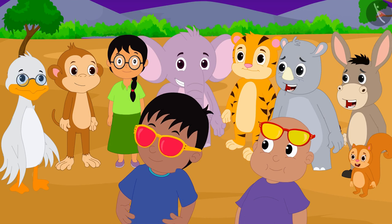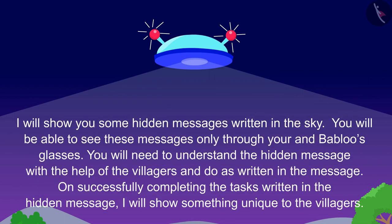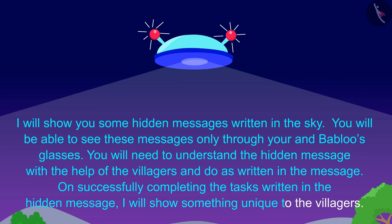Now Raju put on his glasses and looked in the sky towards Jeev's flying saucer. Raju saw this written in the sky: 'I will show you some hidden messages written in the sky. You will be able to see these messages only through your and Bablu's glasses. You will need to understand the hidden message with the help of the villagers and do as written in the message. On successfully completing the task written in the hidden message, I will show something unique to the villagers.'